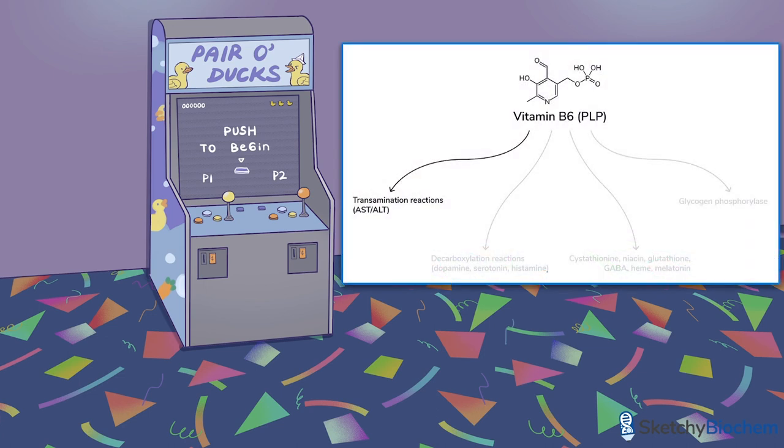Number one: PLP is used as a cofactor during transamination reactions. If you've seen some of our metabolism videos, you know that transamination is when amino groups are transferred to alpha-keto acids to make new amino acids, specifically the non-essential ones.